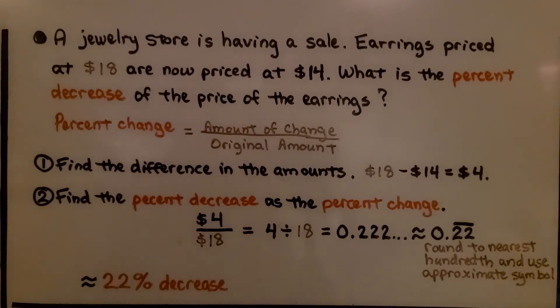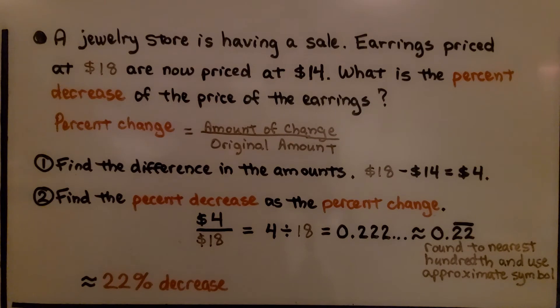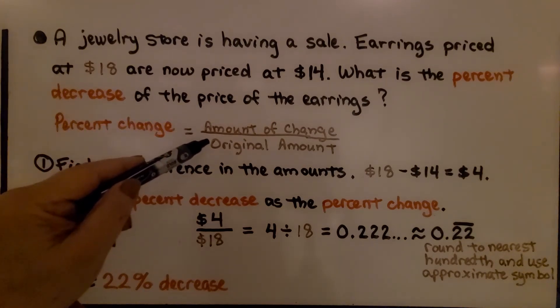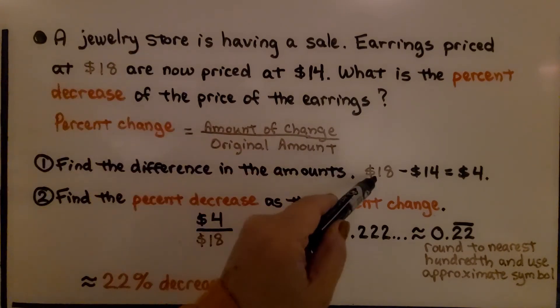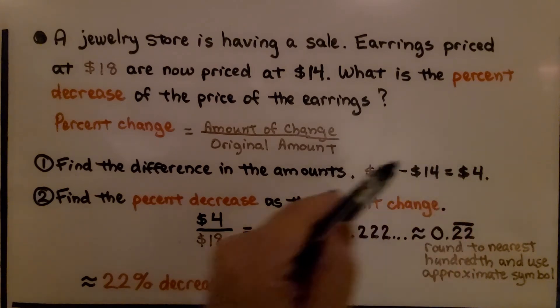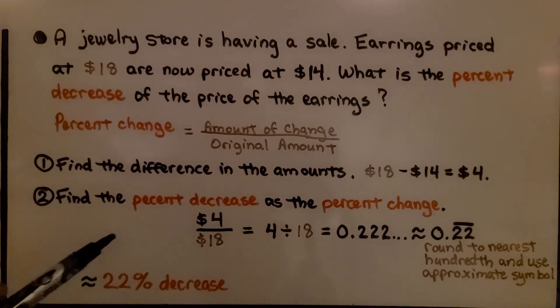A jewelry store is having a sale. Earrings priced at $18 are now priced at $14. What is the percent decrease of the price of the earrings? We're going to do the percent change is equal to the amount of change divided by the original amount. The amount of change would be $18 minus $14. That's $4. That's going to be our numerator. And the original amount was $18.